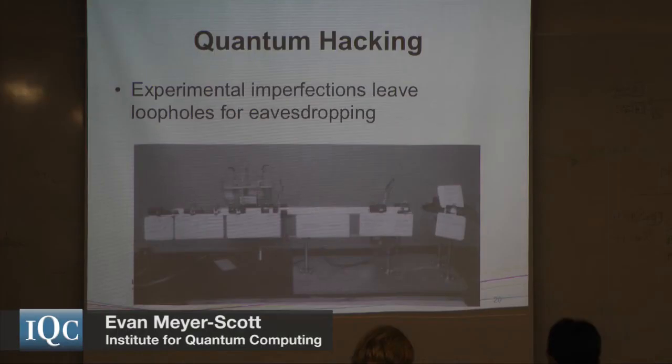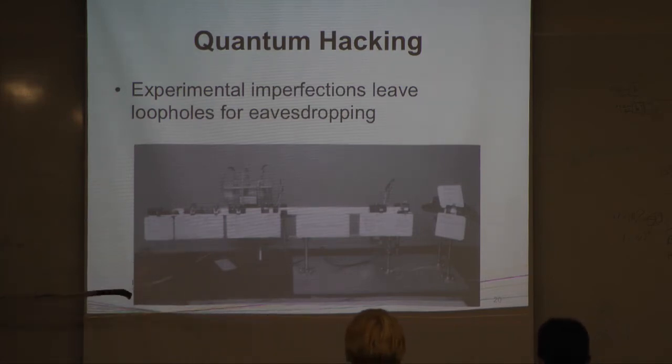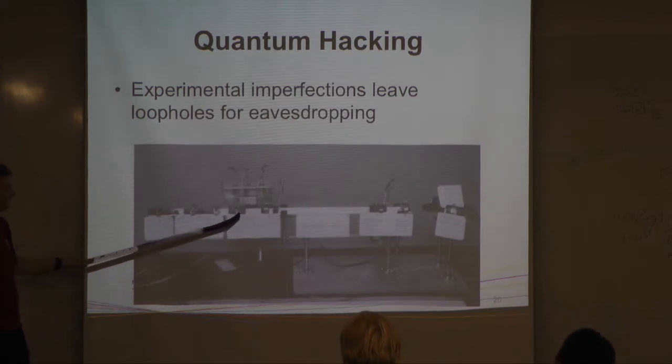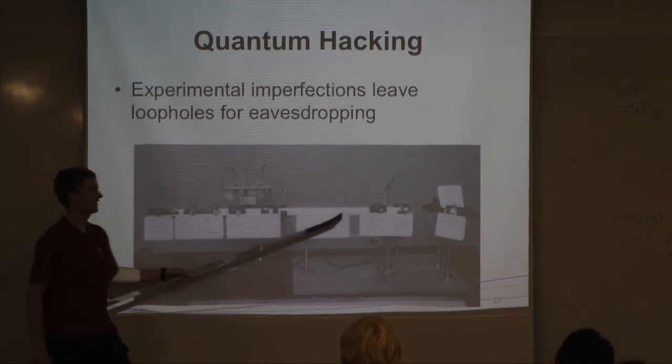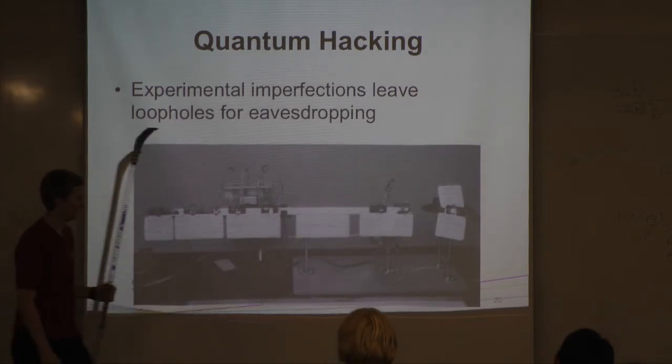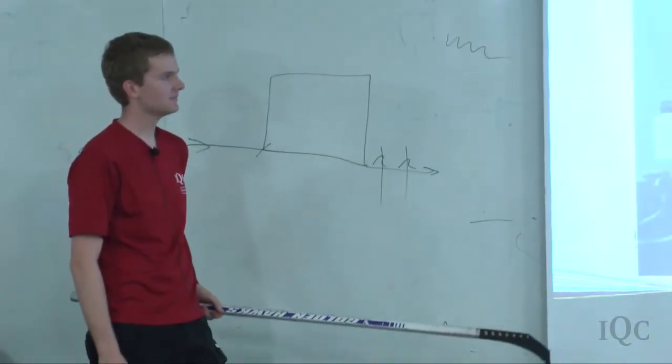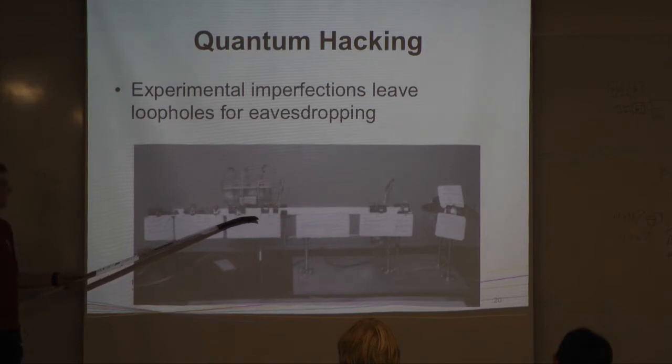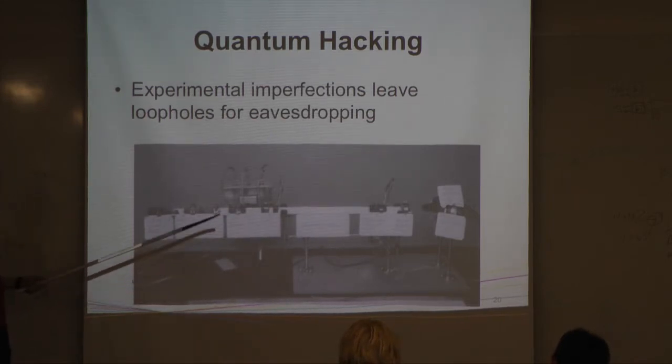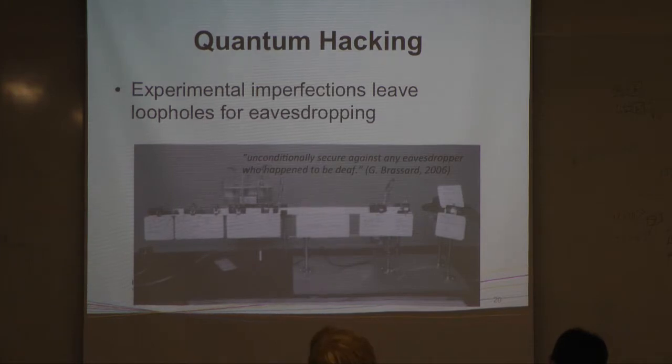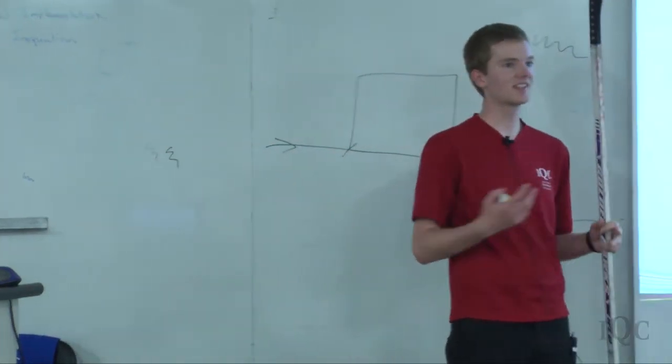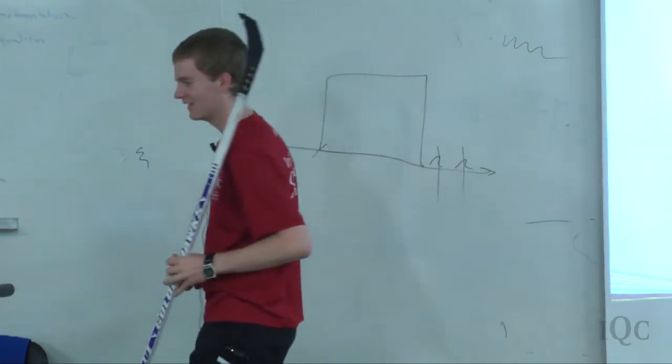Security of QKD is great, but some experimental imperfections leave loopholes for eavesdropping. So this is a picture of the very first QKD implementation. There's a LED here, Alice sets her state here with some electronics. There's the 20 centimeter quantum channel, and then Bob performs his analysis and detection over here. But it turns out that Alice's electronics here made a different noise, a different kind of click depending on whether they sent in the HV or the plus minus basis. So that's an example of a side channel where the Alice and Bob systems leak some information to an eavesdropper that you can use to gain information.